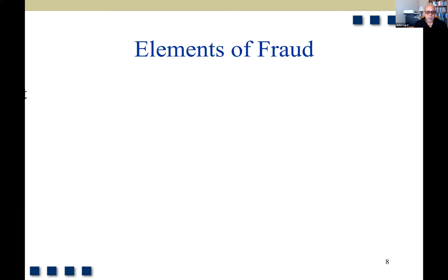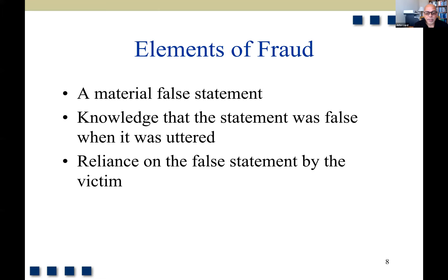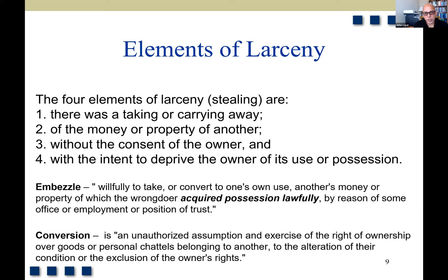The elements of fraud: there needs to be a material misstatement. In order for it to be fraud, there has to be intent — the individual would have had to know they were making a misstatement. Then there is the reliance of the victim — maybe the company or whoever is making a decision on that false statement — and then damages resulting. These would be the elements of fraud because of reliance on the false statement.